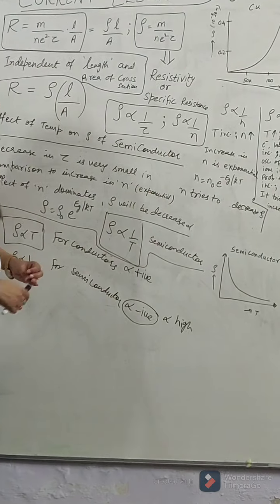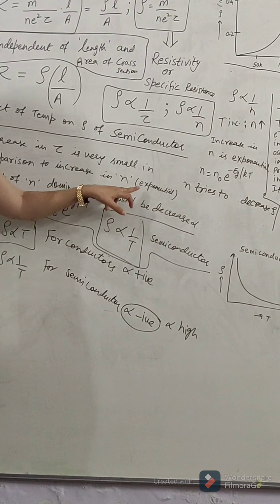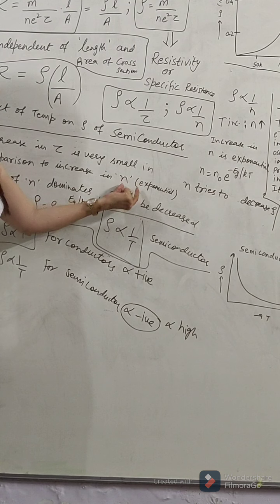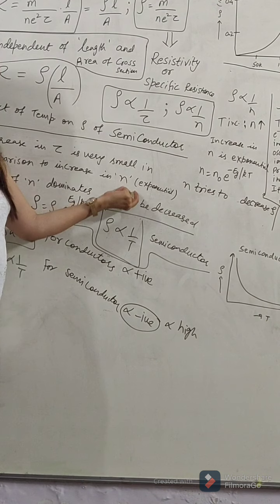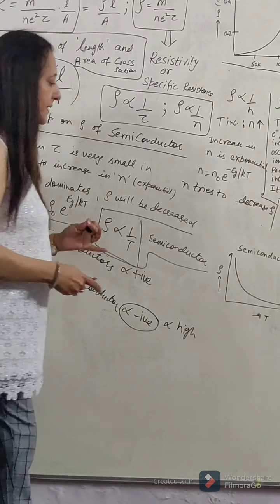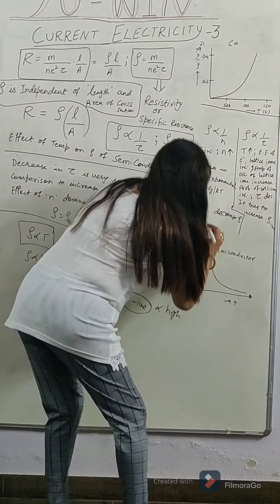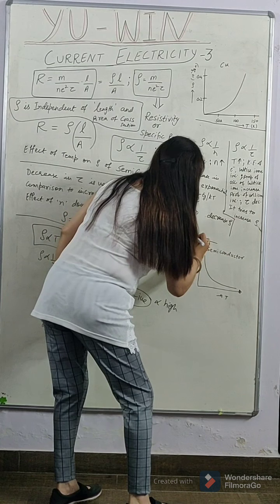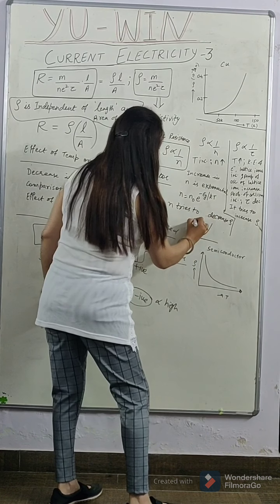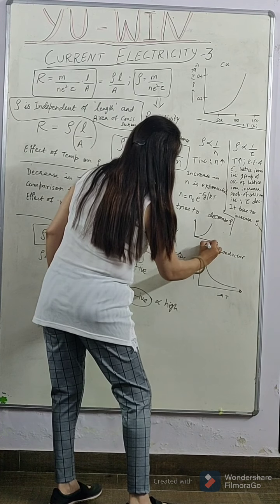This you will study in the chapter of semiconductor. But broadly speaking, you can remember that number density increases drastically. The increase in the number density is like this. This is the number density increase with the effect of temperature.